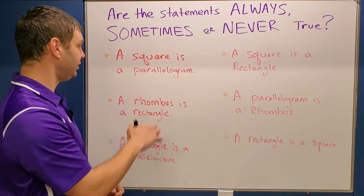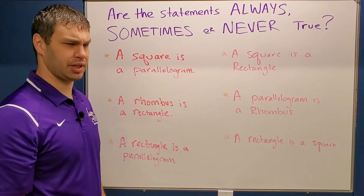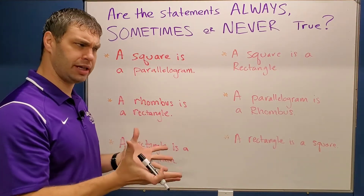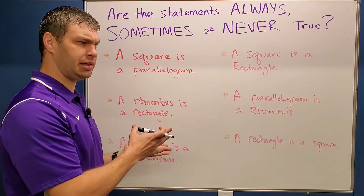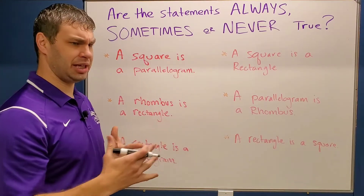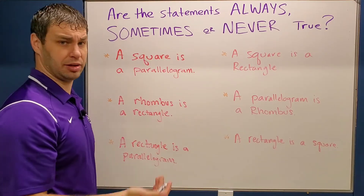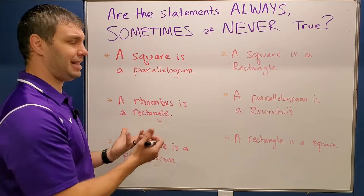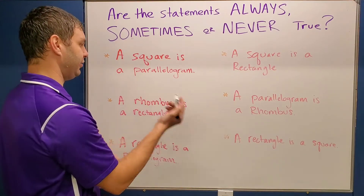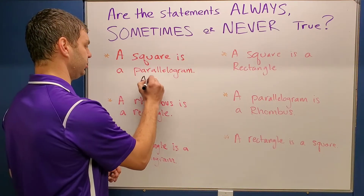The first one: a square is a parallelogram. Think about a square — is that always a parallelogram? It's always a parallelogram. You can't have a square and say that it's not a parallelogram ever. So this has to be always true.